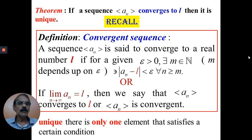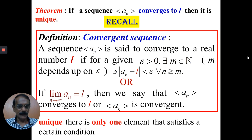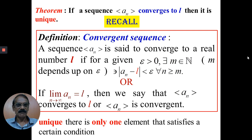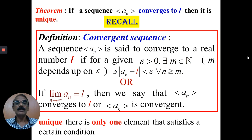Normally, what we do is we first assume that l1 is not equal to l2 and then proceed. While proceeding, we will get a contradiction. Why does this contradiction arise? Because what we assumed in the beginning is not correct. Therefore, we have to change our assumption — since we assumed l1 is not equal to l2, now we change it to l1 equals l2. That is, l1 and l2 are one and the same. This is how we prove uniqueness.